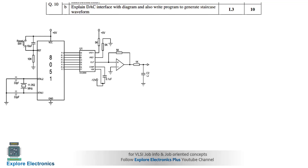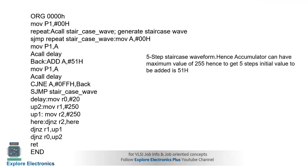The last question asks to explain the DAC interface with a diagram and write a program to generate a staircase waveform. The diagram shows the DAC interfacing setup. The program generates a five-step staircase waveform, where the accumulator has a maximum value of 255. The number of steps can be varied by adjusting the accumulator value accordingly.